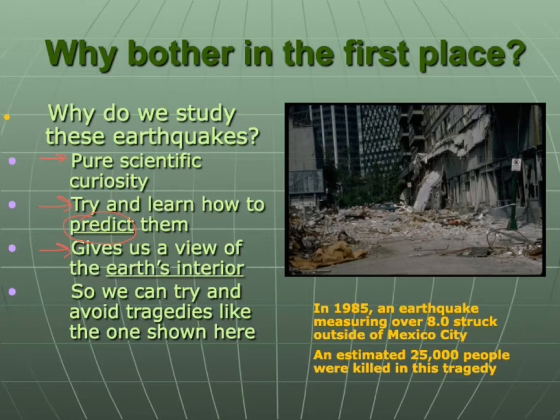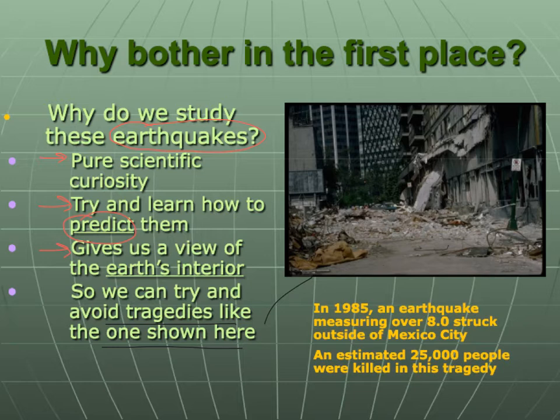As the waves propagate through the different layers of the earth, we can listen to those waves, we can image those waves, and get a better understanding of how the layers are differentiated below us. Much in the same way that a sonogram is used to look at an unborn baby in the mother's womb with sound waves, earthquake waves can produce images of the layers below our feet. And hopefully we'll get to a point sometime in the near future where we can really avoid tragedies like the one shown here.